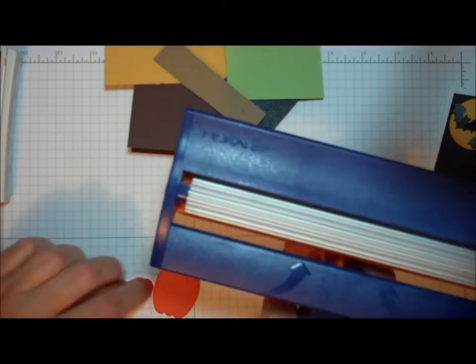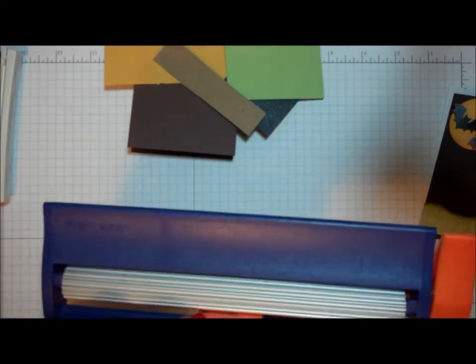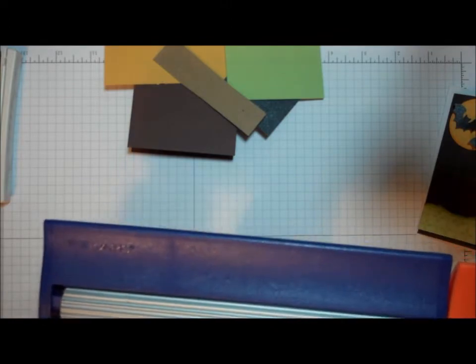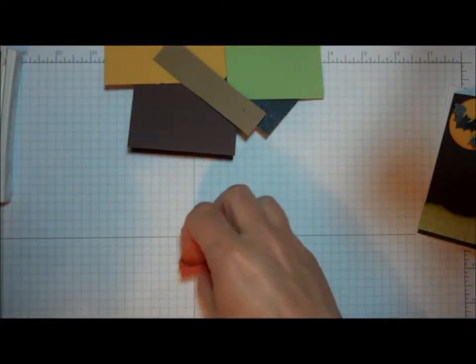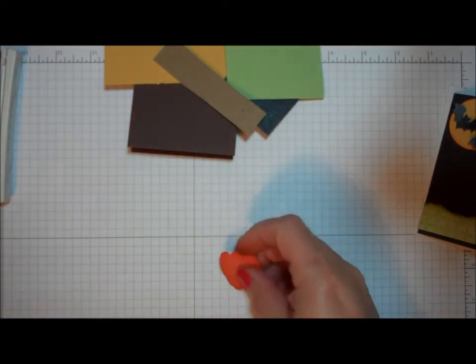And I took my pumpkin shape. Now I want my ridges to go up and down on my pumpkin, so make sure you put it in there the right way. I laid my pumpkin shape on my crimper and ran it through. And there is my basic pumpkin shape.